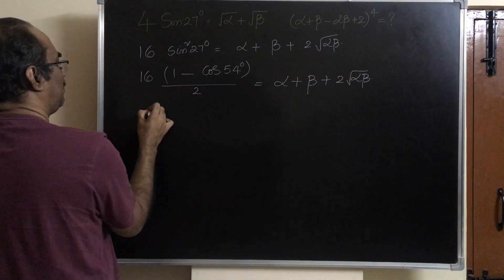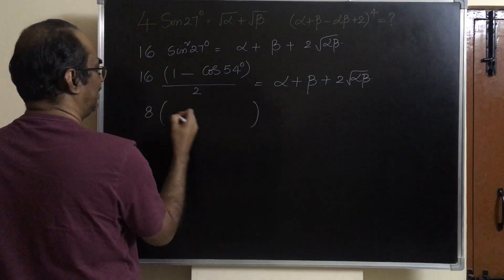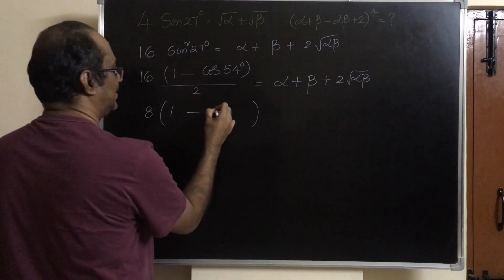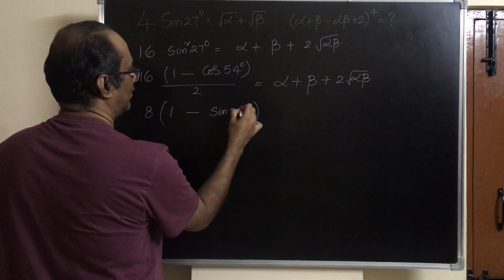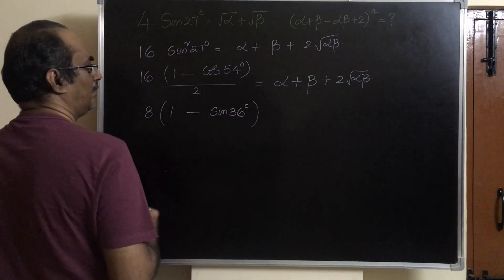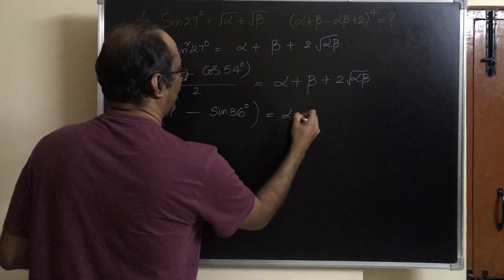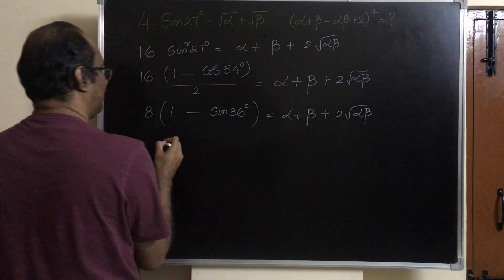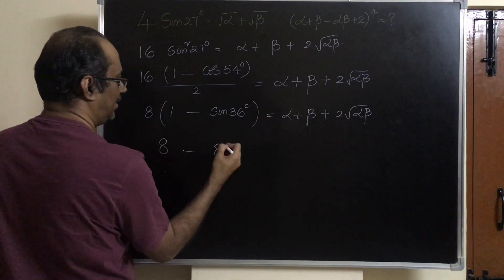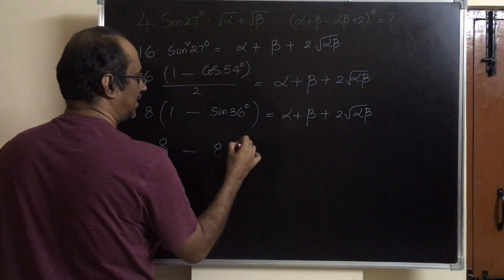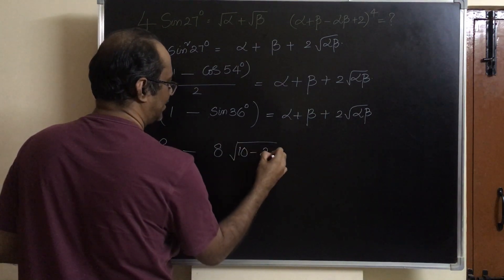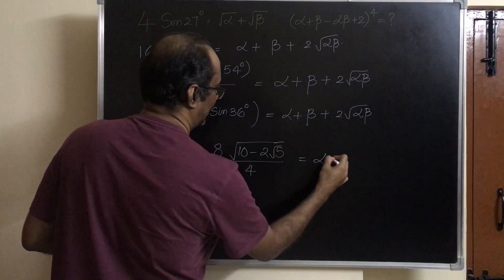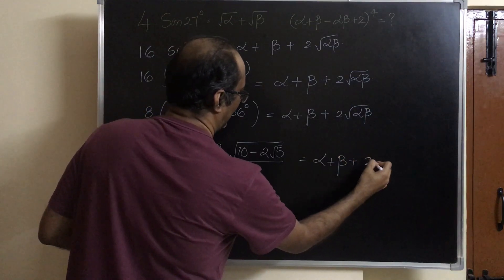16 by 2 equals 8, so we have 8 into 1 minus cos 54. Cos 54 is nothing but sin 36 degrees, which equals alpha plus beta plus 2 root alpha beta. Opening the brackets: 8 minus 8 times sin 36. The value of sin 36 is square root of 10 minus 2 root 5, divided by 4, equals alpha plus beta plus 2 root alpha beta.